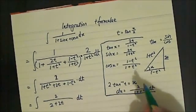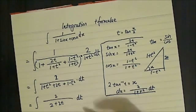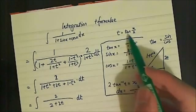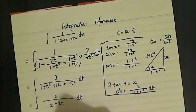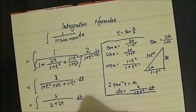Just make sure that you change the t's back into terms of x. Since we defined t as tan(x/2), the final answer is ln|1 + tan(x/2)| + c.